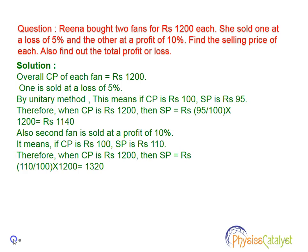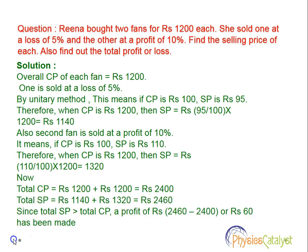Therefore, when cost price is 1200, the selling price will be 110 divided by 100 into 1200, which is equal to rupees 1320. Now total cost price will be 1200 plus 1200, which is equal to rupees 2400.